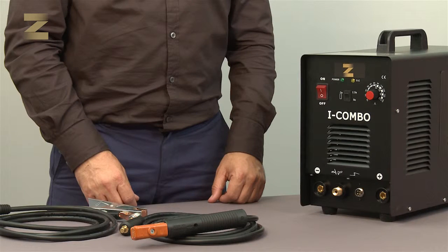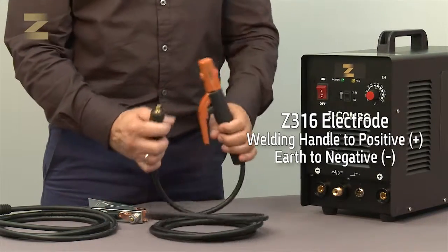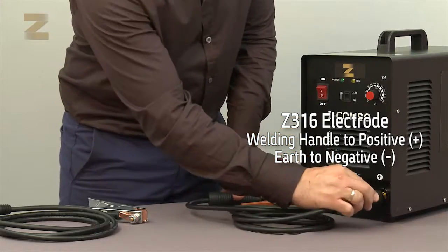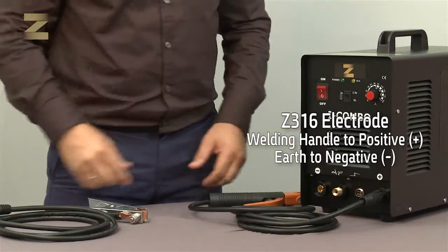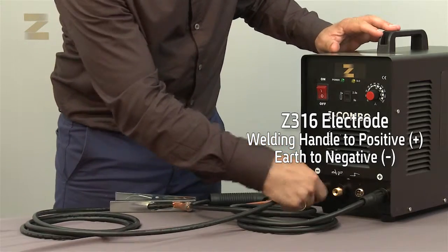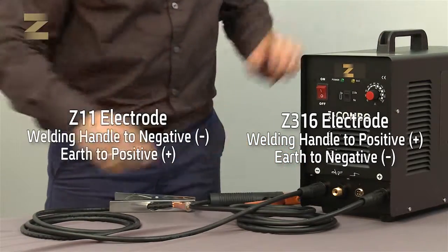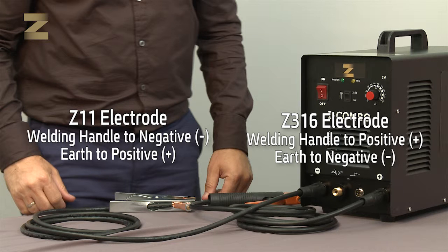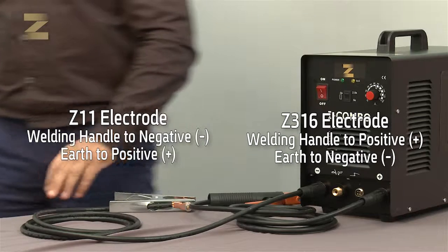Please note, each electrode is attached with instructions on the packaging label for the connection of the welding handle to the positive or negative connector. For example, in electrode Z316, the welding handle is connected to the positive connector and the earth connection handle is connected to the negative connector. In the case of Z11, the welding handle is connected to the negative connector and the earth connection handle is connected to the positive connector. Make sure to select the correct connection.